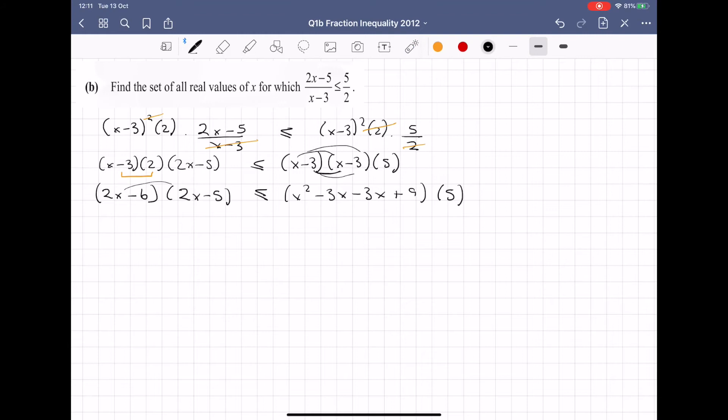So now I have 2x by 2x is 4x², 2x by -5, -10x. Remember, at any stage, you should stop this video and see can you get it out yourself. 5 by x², 5x², 5 by -3x, -15x, 5 by -3x, -15x, 5 by plus 9 is 45.